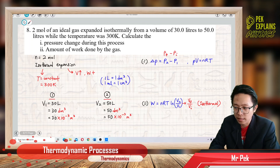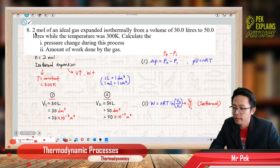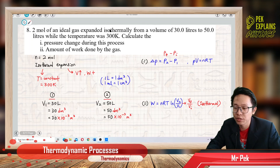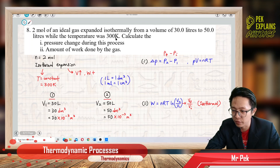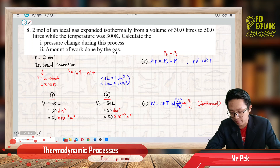Let us discuss question 8. 2 mol of an ideal gas expanded isothermally from a volume of 30 liters to 50 liters while the temperature was 300 Kelvin. Calculate the pressure change during this process and also the amount of work done by the gas.